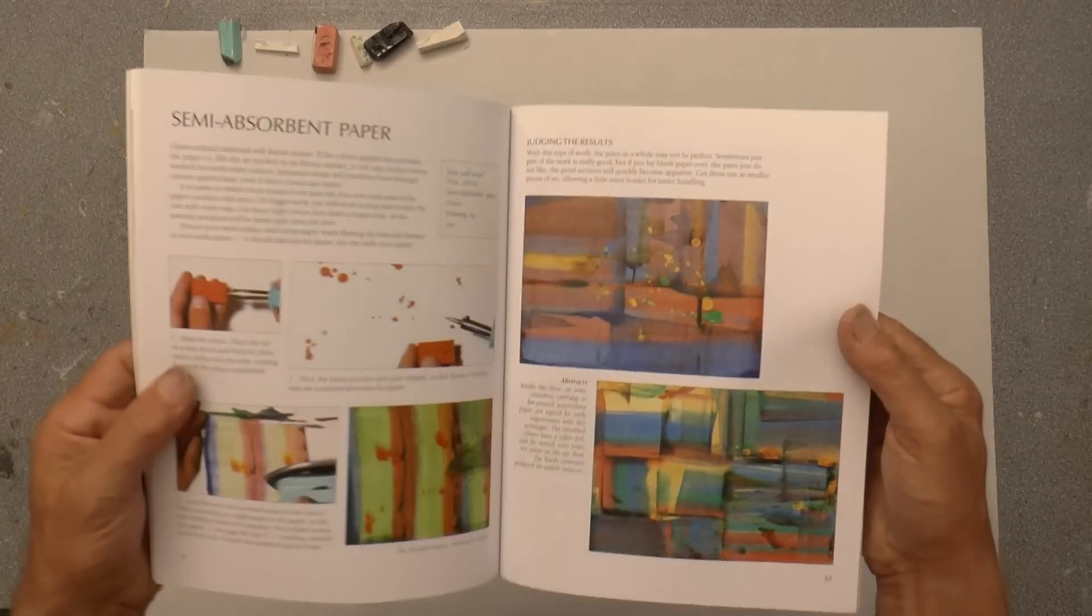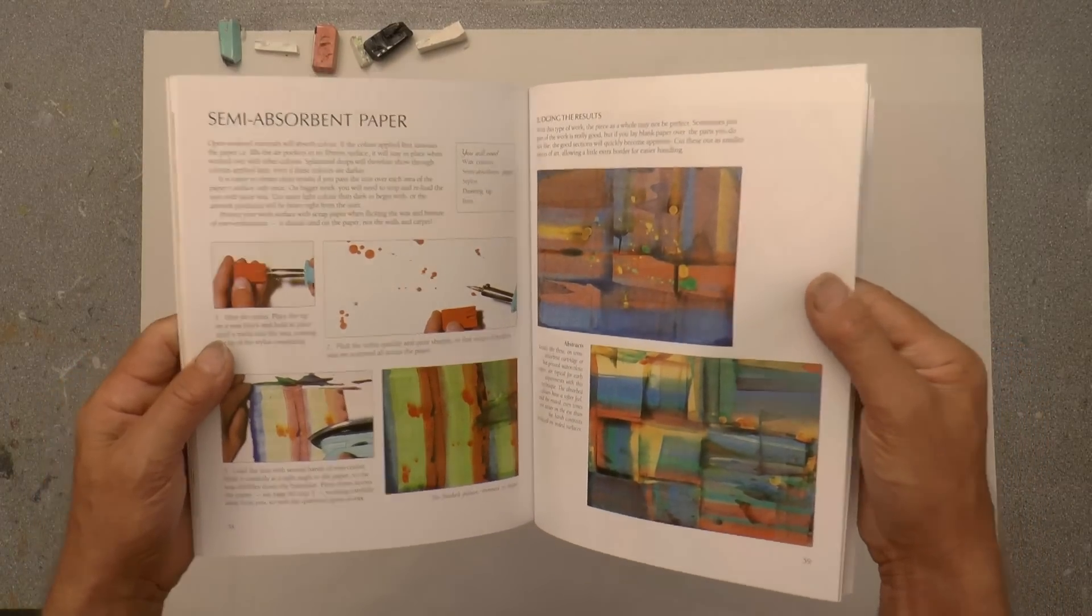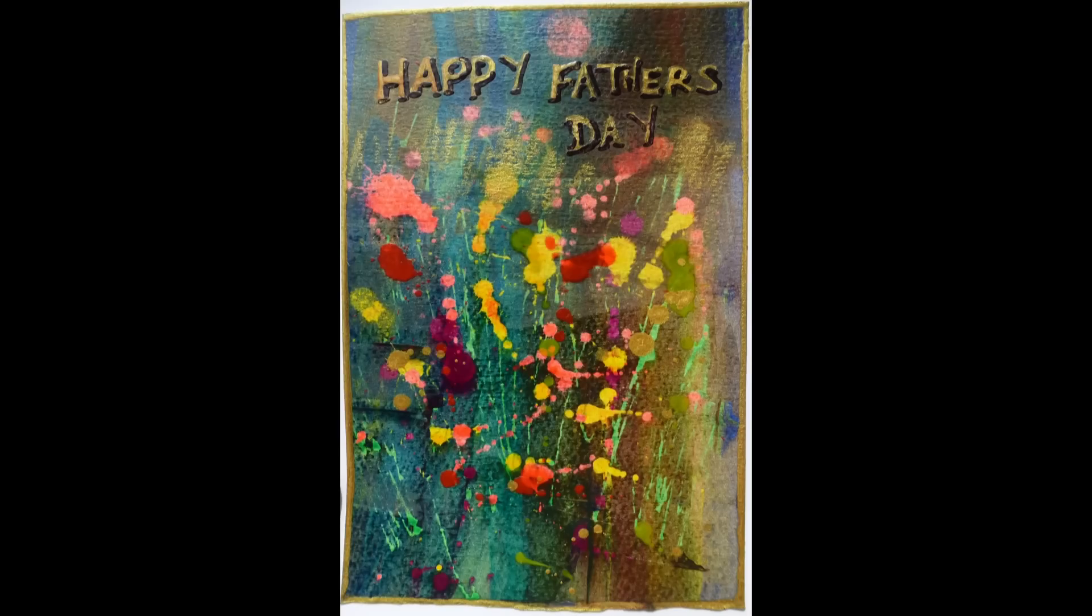The project book on encaustic art contains information about using absorbent and semi-absorbent paper, amongst other things, watercolor paper. What happens here is that the wax absorbs like this card, so it's pushed with the edge of the iron or wiped on with the iron and it absorbs into the fabric of the paper.